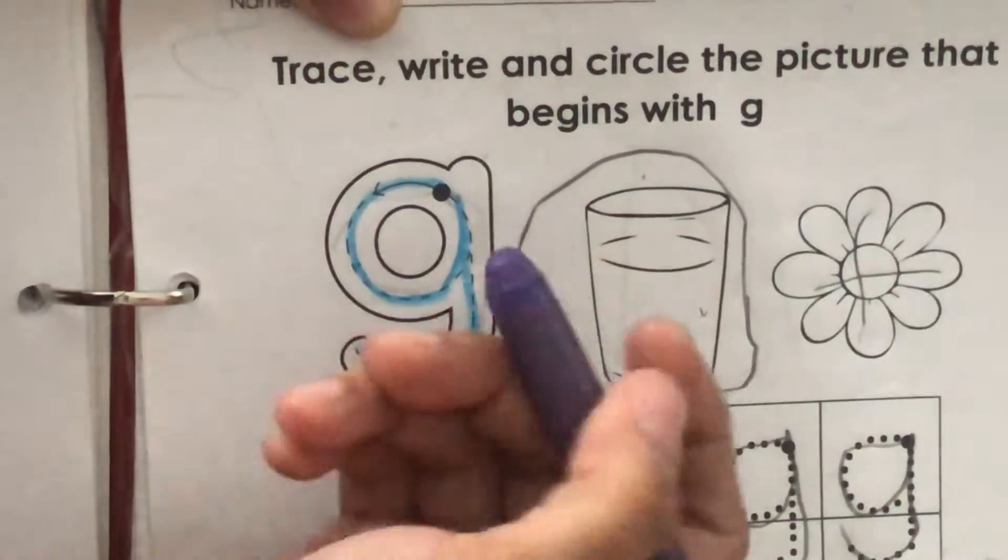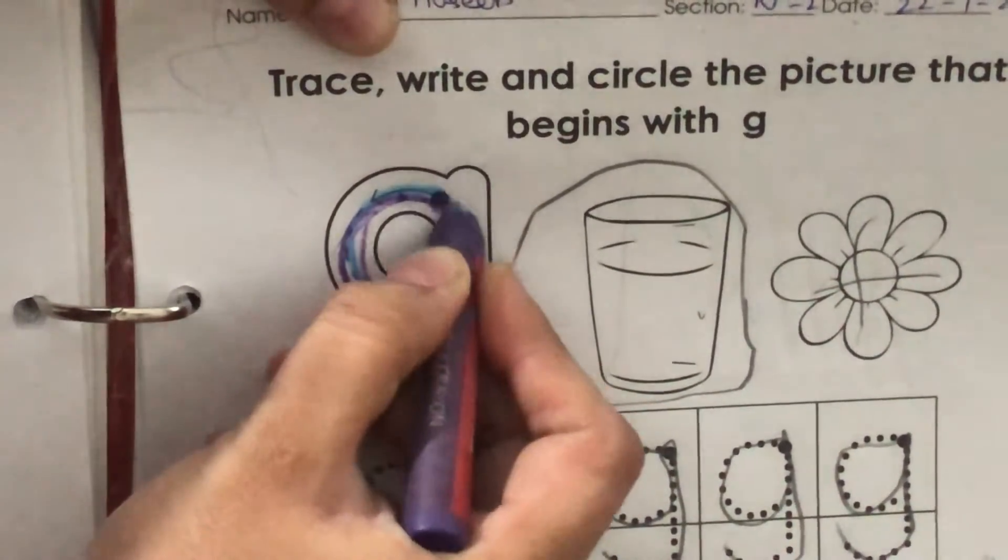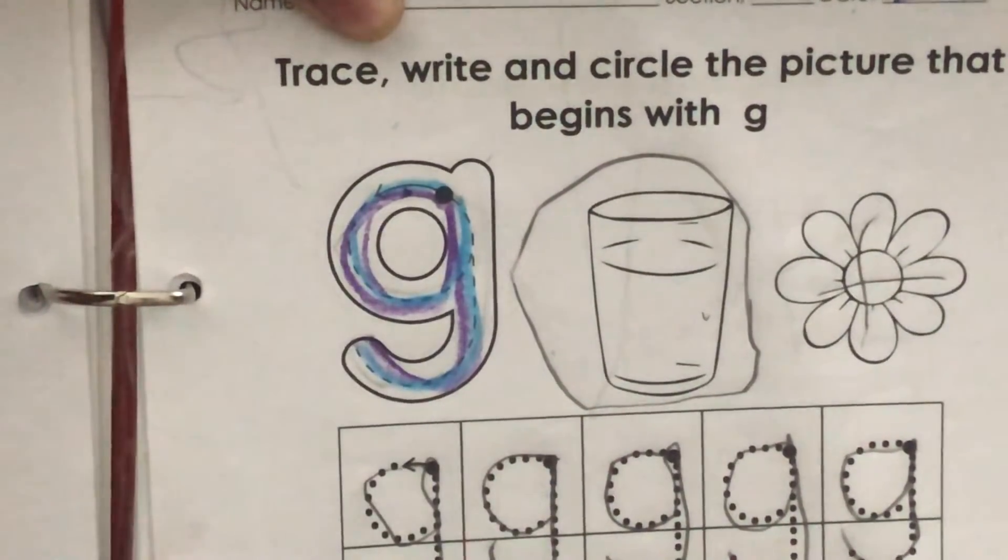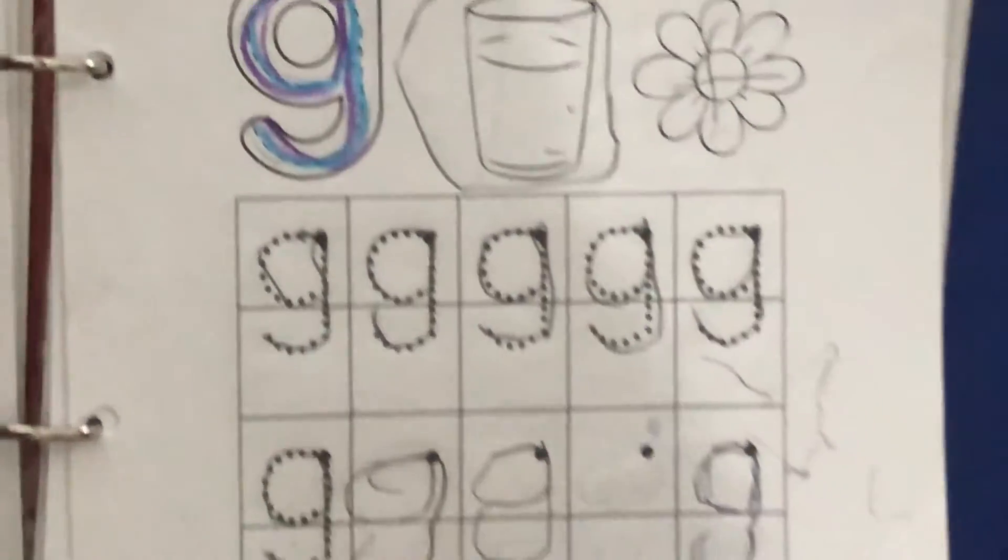Again, make a ka first, go up, come down straight, make a monkey tail. This is how we can trace the ga sound.